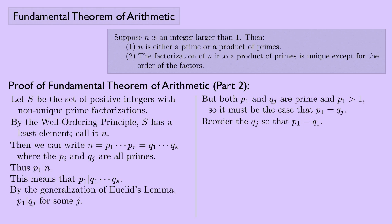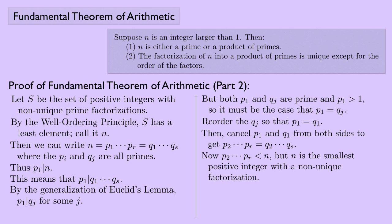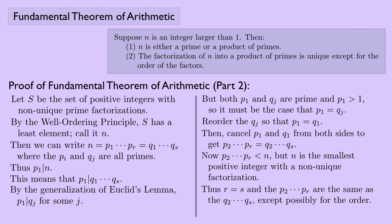We can cancel p1 and q1 from both sides, so now we have p2 times p3 all the way up to pr equals q2 times q3 all the way up to qs. We know that p2 through pr multiplied together has to be less than n, because n was p1 times all the way up to pr. But n is the smallest positive integer with a non-unique factorization. Therefore we have to have that r equals s and that all the p's are the same as all the q's except for possibly the order. And this is a contradiction.